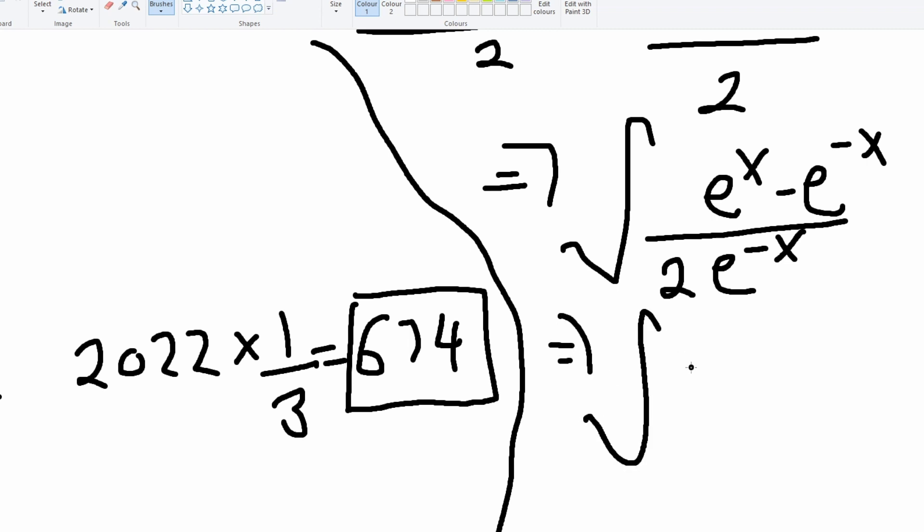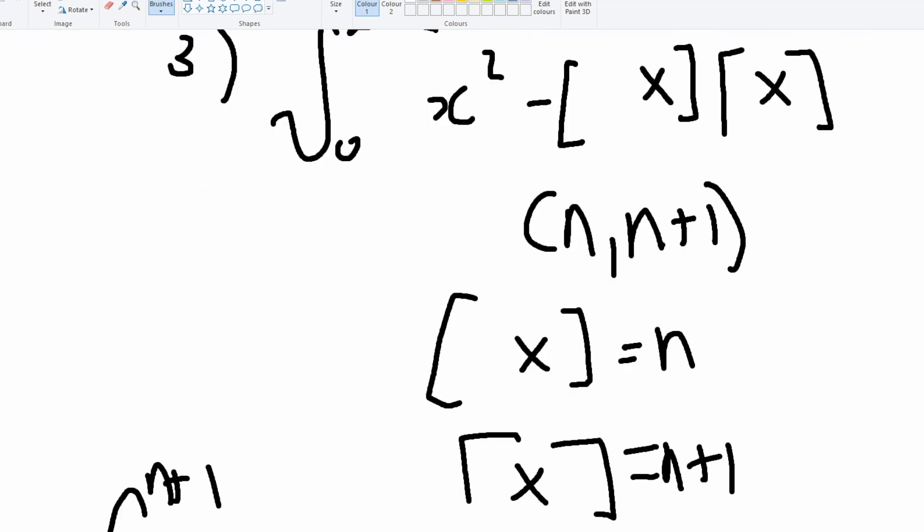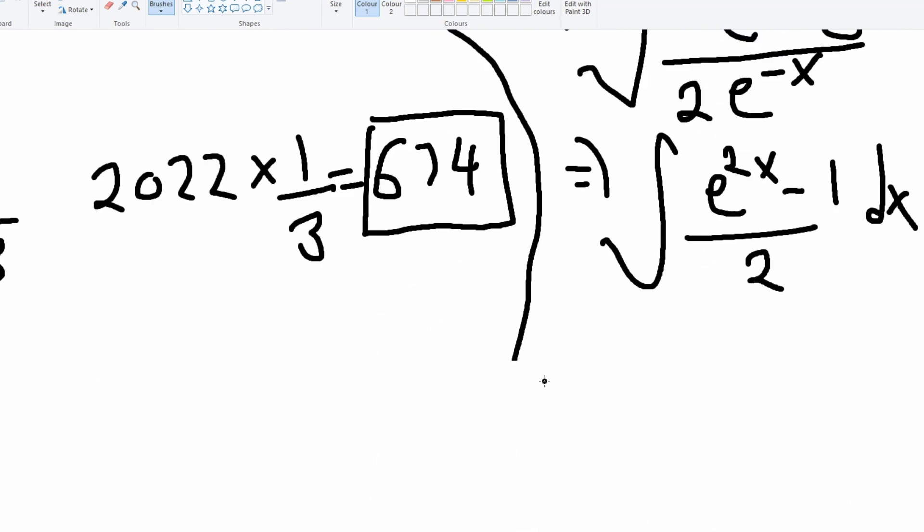The integral of e to the power of 2x minus 1 divided by 2 with respect to x. And this becomes really simple, it's going to give us e to the 2x to the power of 2 divided by 2 minus 1 half if we simplify this integral.